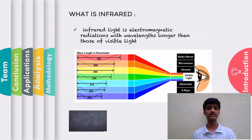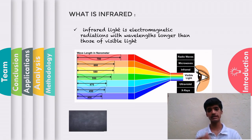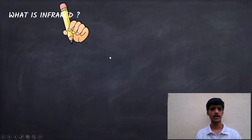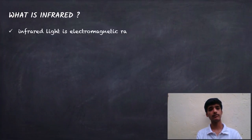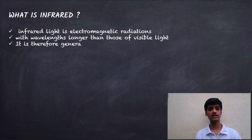What is infrared? Infrared light is electromagnetic radiation with wavelengths longer than those of visible light. By looking at the picture shown, you will get an idea of what infrared light is and where it lies in the spectrum. Infrared light is therefore generally invisible to human eyes.